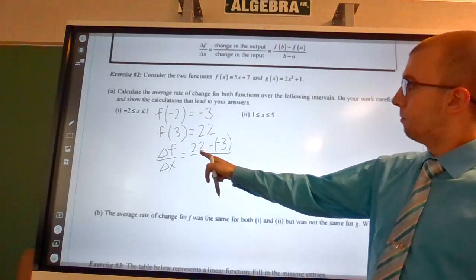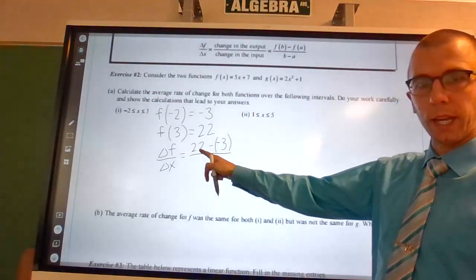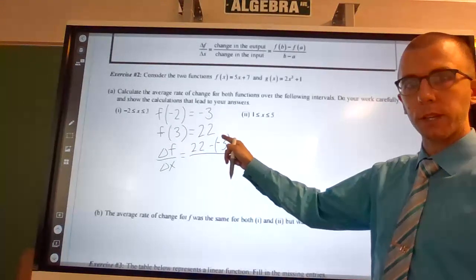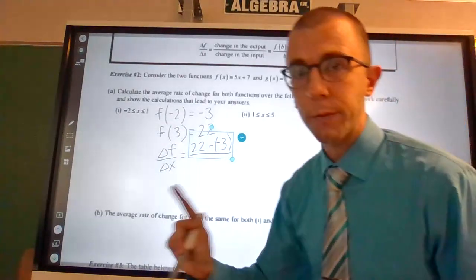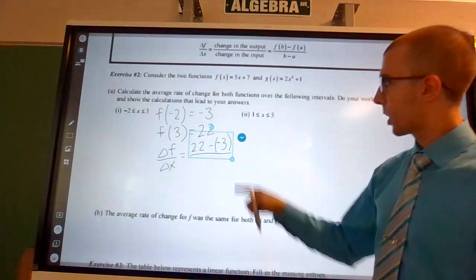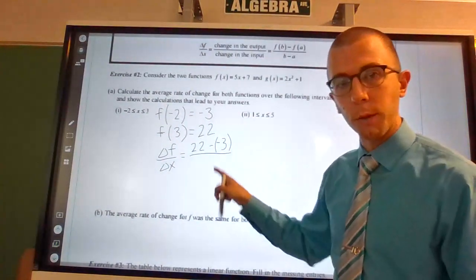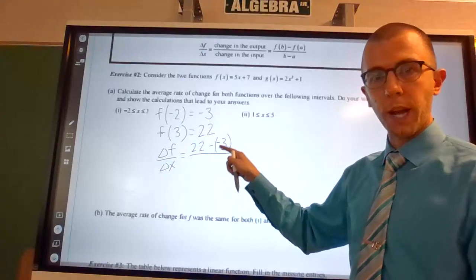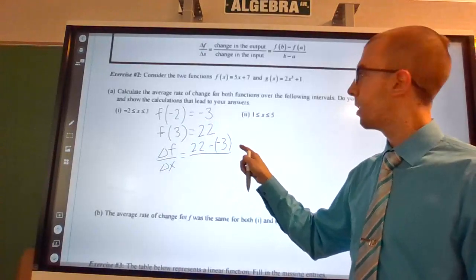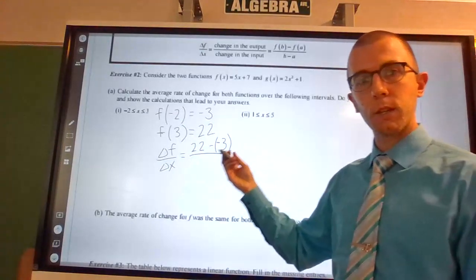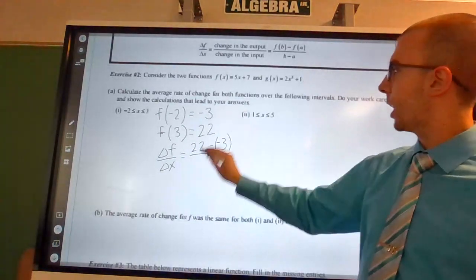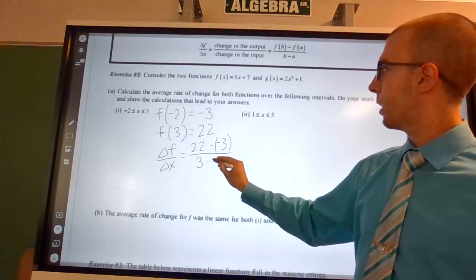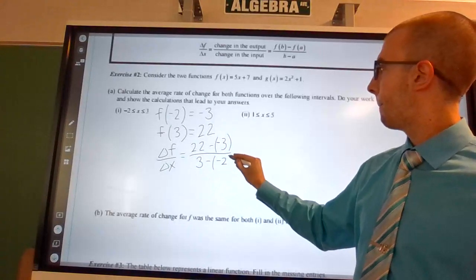This was my second output, 22 minus negative 3. So another place where I will say, be careful of your negatives. Because when you're using the average rate of change formula, you're always subtracting. So if we're subtracting a number that's negative, we technically end up adding. 22 minus negative 3 over 3 minus negative 2.